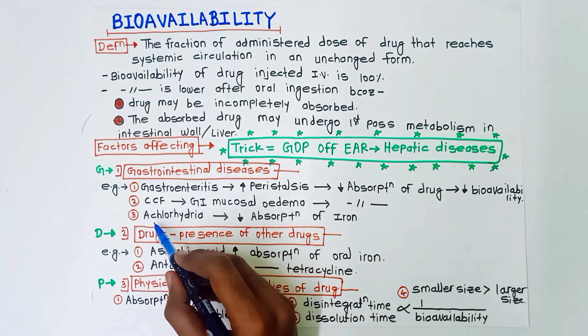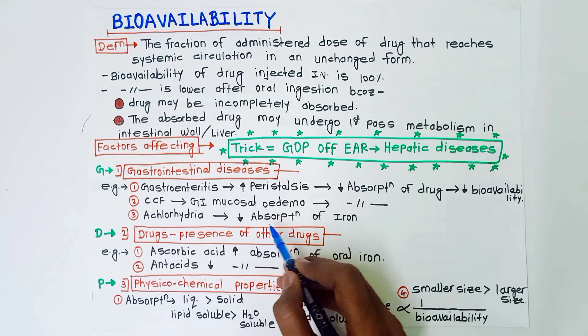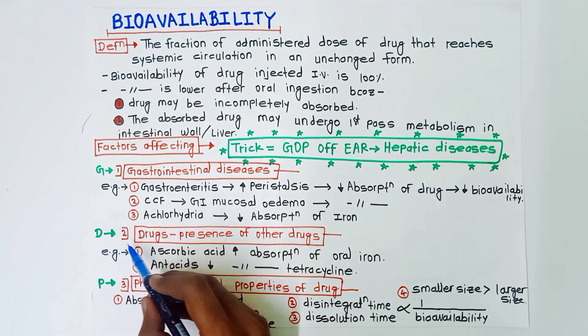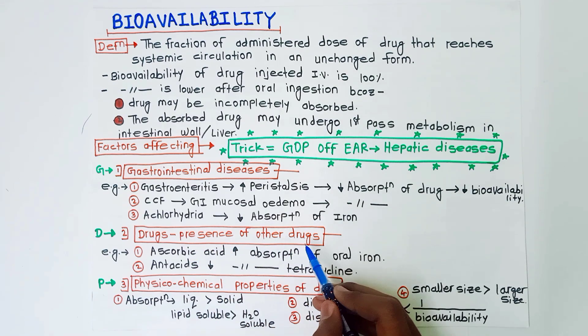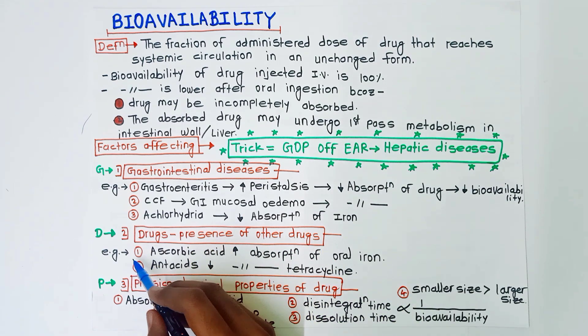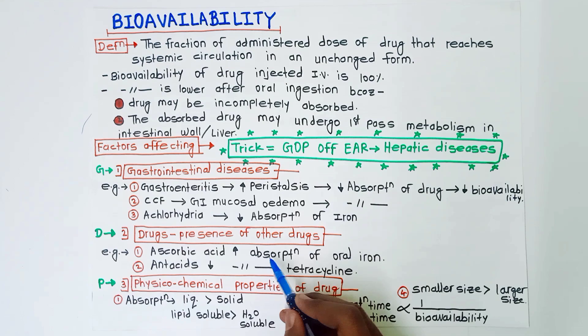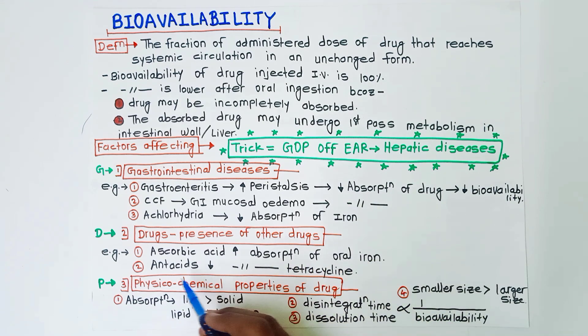Next is D for drugs, that is presence of other drugs. Example is ascorbic acid increases the absorption of oral iron and antacids decrease the absorption of tetracycline.